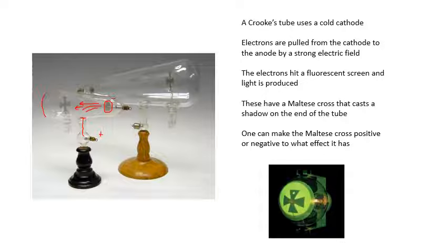In these particular tubes here we have this thing called a Maltese cross, and we can see it on this photo that the Maltese cross is casting a shadow. And you can do things like making the cross positive and negative and seeing what effect it has. But anyway, this vacuum tube, a very early vacuum tube, is called a Crookes tube and it was very important, used in lots of experiments, particularly by William Thomson.